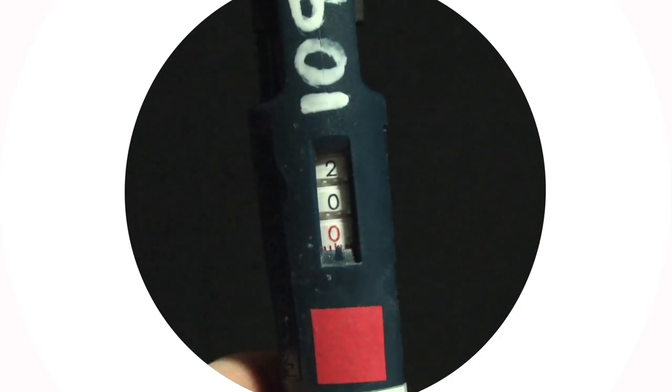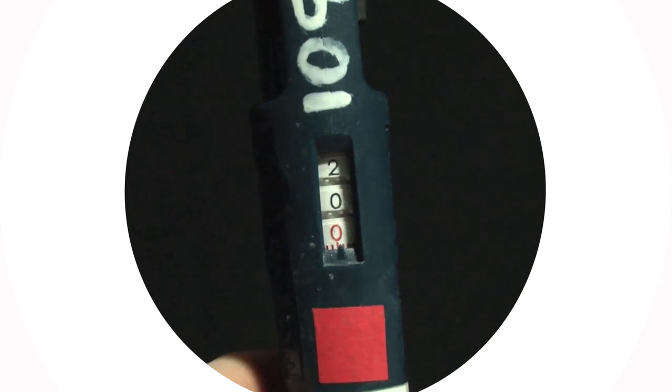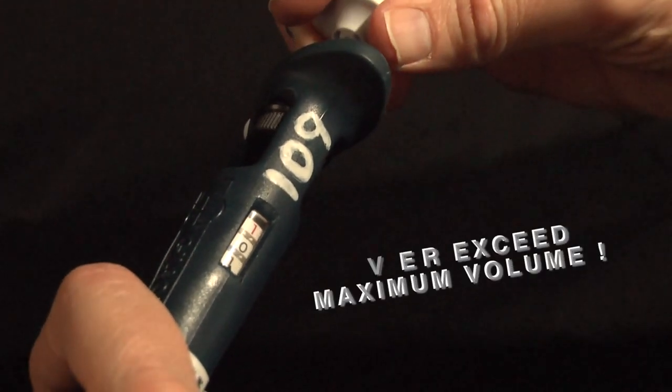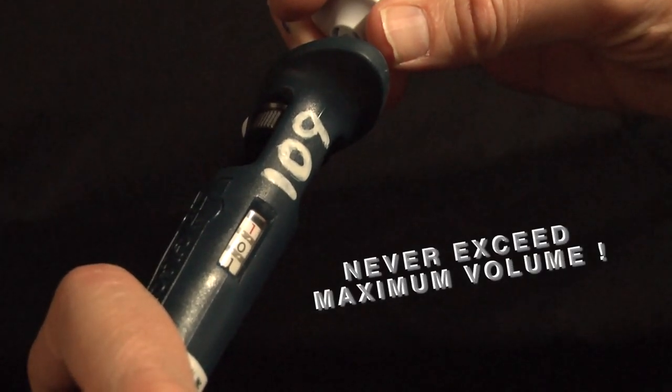It is very important when using the micropipetters that you never exceed the maximum volume by over-dialing the volume adjustment knob. This will cause the tool to lose its calibration and sometimes to become disassembled.